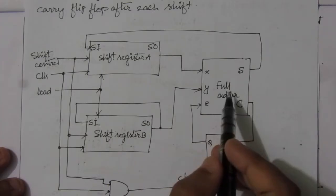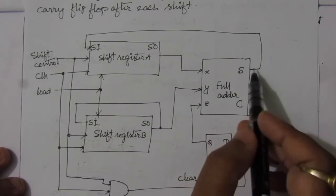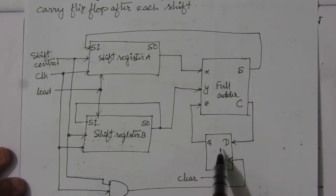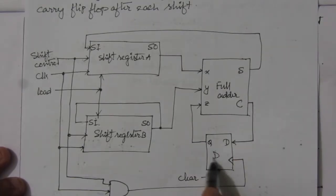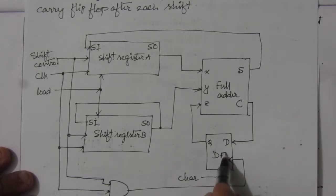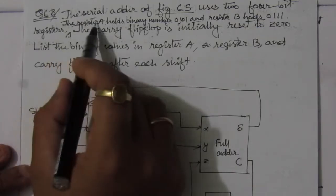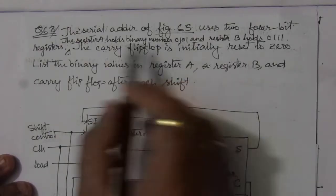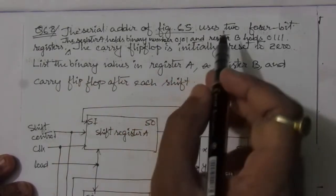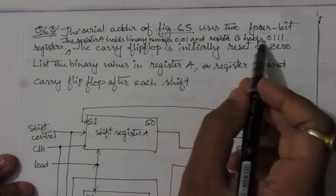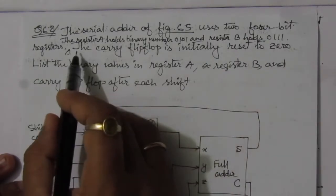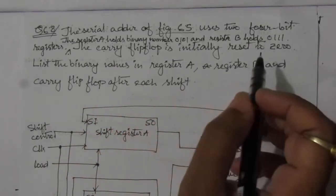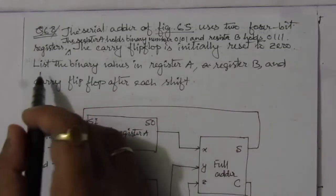Here we have the full adder circuit with a sum output and a carry output. The carry output is fed back through a D flip-flop. We are given that register A holds the binary number 0101, register B holds 0111, and the carry flip-flop is initially reset to 0.